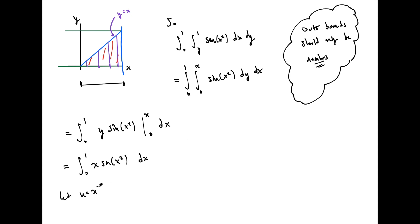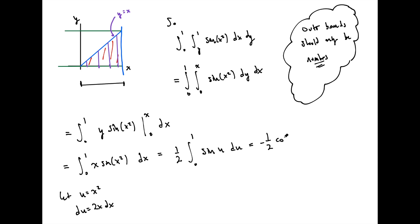Let u = x², so du = 2x dx, meaning x dx = (1/2)du. The bounds stay the same: u = 0 to 1. The integral becomes (1/2)∫₀¹ sin(u) du. The antiderivative of sin(u) is −cos(u), evaluated from 0 to 1. Plugging in: −(1/2)cos(1) + (1/2)cos(0) = −(1/2)cos(1) + 1/2. That's the final answer; the key step was recognizing to switch the order and re-deriving the correct bounds.